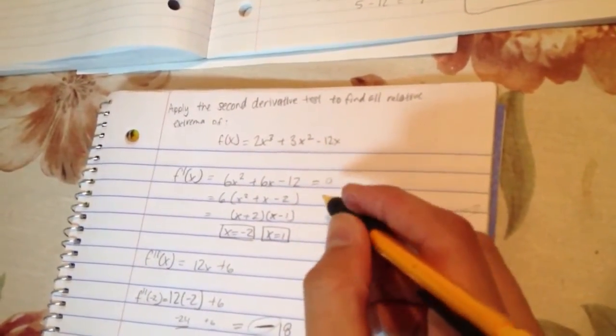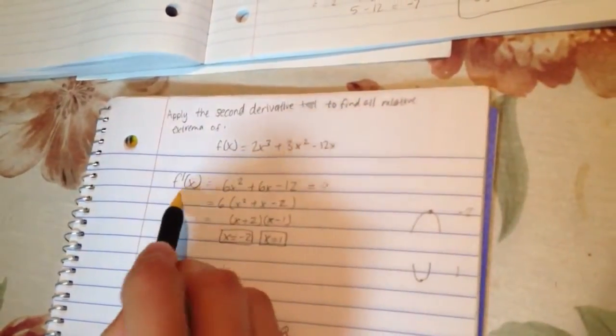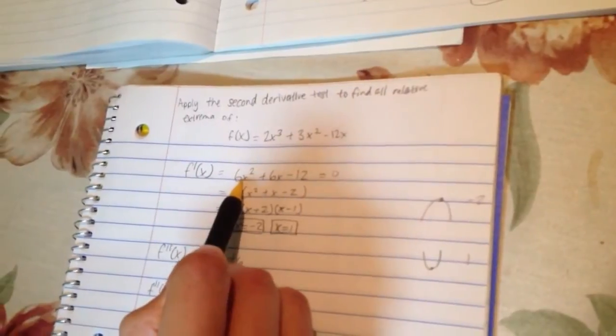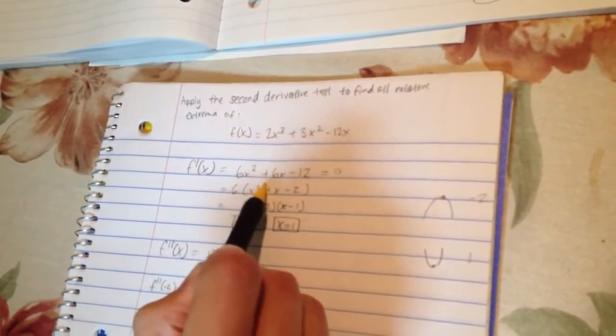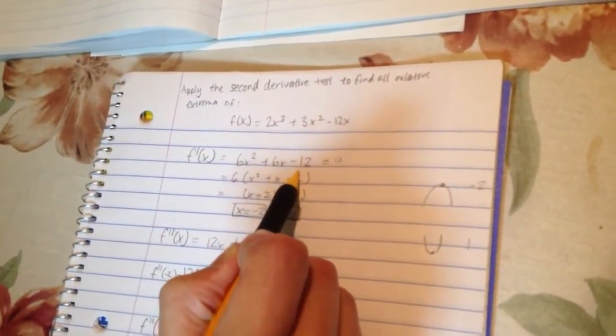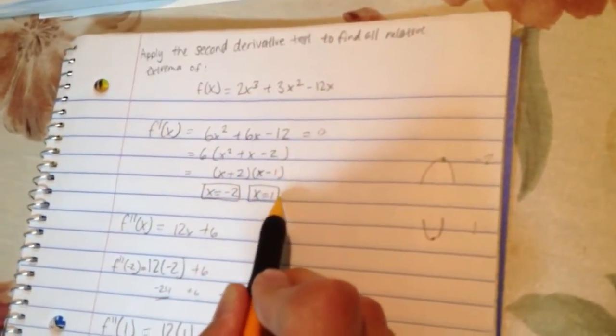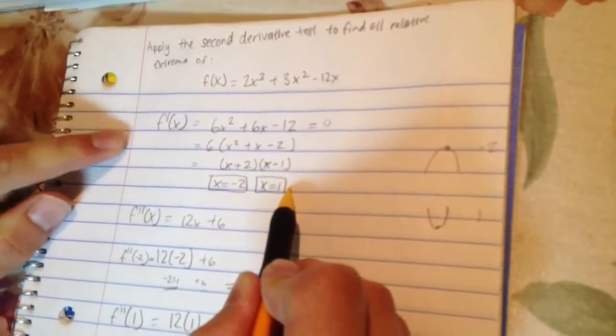Now, I'm assuming you know how to take a derivative at this point, so that's what I did in this first step. I took the derivative of this original function and was left with 6x squared plus 6x minus 12. And I factored that to make it a little bit easier to find my critical points which are found from the first derivative.